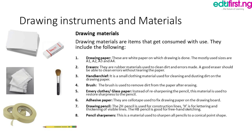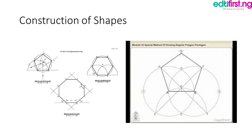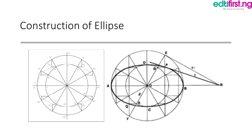With the help of these drawing instruments and materials, we are able to construct different shapes. For example, we can construct a polygon using a compass, ruler, and set-square. We can also construct a regular octagon, hexagon, regular pentagon, and so on. With drawing instruments we can also construct an ellipse — this is where the French curve comes into play, as it is used to join all the points together to give us the ellipse, which is our final drawing.